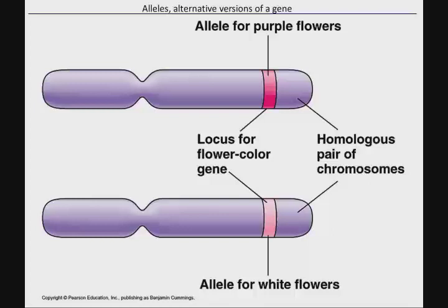Each chromosome in a pair is called a homologous chromosome, meaning they have all the same genes. For example, both chromosomes have the flower color gene on them. But it doesn't mean their DNA sequence is exactly the same, because the allele for purple flowers is different from the allele for white flowers. An allele is just a fancy word for a version or alternate form of a gene — both are the gene for flower color, but they're slightly different. One came from mom, one came from dad.